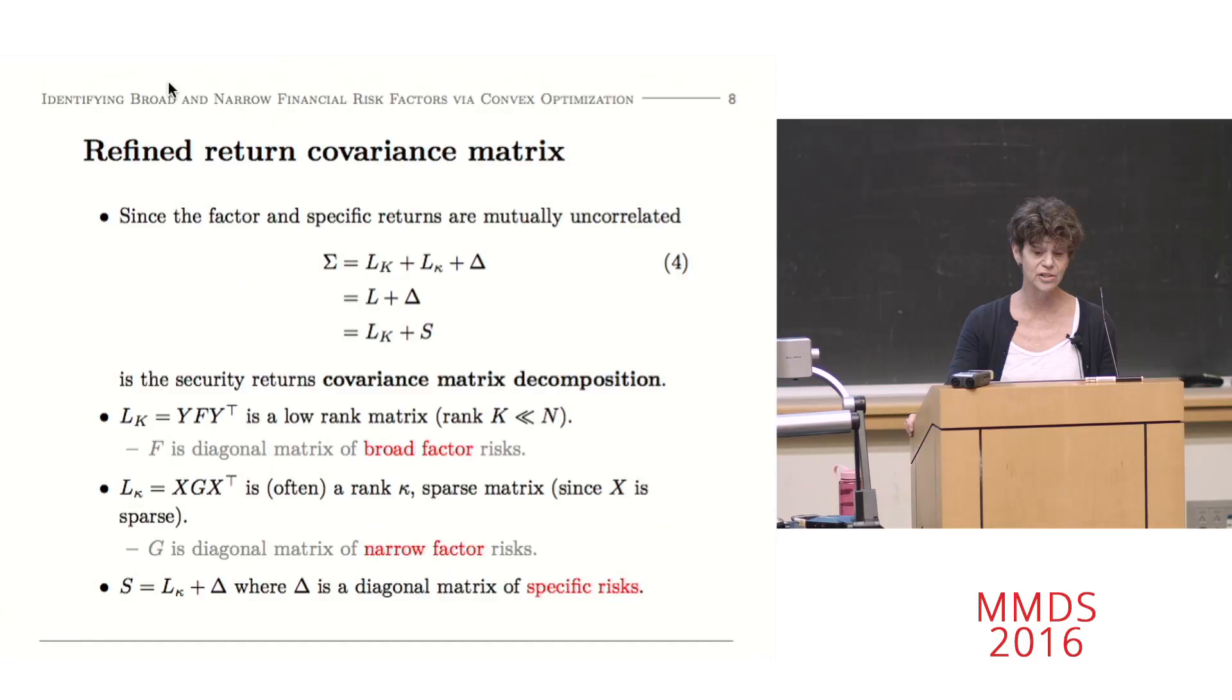So I've got a three-term decomposition. I've got capital K, which I'm going to use for my number of broad factors. I'm going to use the Greek kappa for the number of narrow factors. Think countries or industries. And then the epsilons are going to be left over. Now at the bottom, we have some model assumptions. K is much smaller than n, the number of securities, as is kappa. And we're going to be assuming x is sparse. This comes from our friends, the fundamental analysts, who have been telling us what these factor models look like since the 1970s.